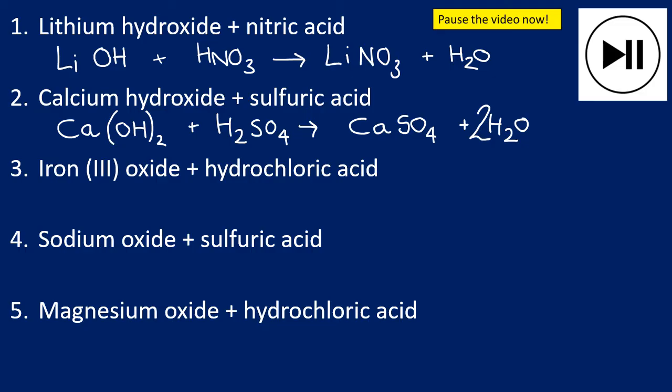Number three: iron(III) oxide. Slightly more complicated. This means iron is 3+, that's what this three means. So it's 3+, oxide is 2-, so the formula for iron(III) oxide is Fe2O3. Quick reminder: iron is 3+ and oxide is 2-.